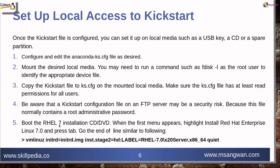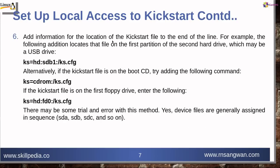Boot the RHEL 8 installation DVD. When the first menu appears, highlight 'Install Red Hat Enterprise Linux 7 or 8' and press the Tab key. Go to the end of the line and make some changes. Add the location of the kickstart file to the end of the line — for example, specifying that the kickstart file is located on USB drive /dev/sdb1/ks.cfg.